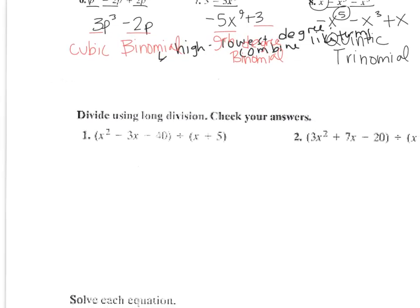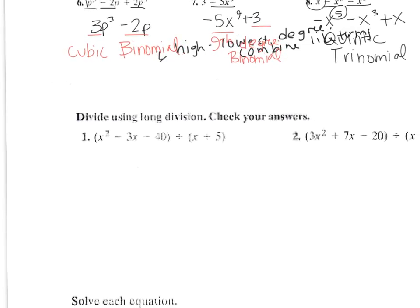Long division. So what you want to do is put x plus 5, because that's what you're dividing by, on the outside. And rewrite x squared minus 3x minus 40 on the inside. So you're not skipping a term, so I'm just going to write it how it is: x squared minus 3x minus 40.